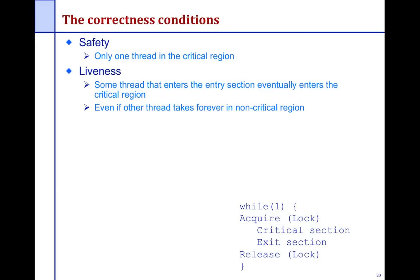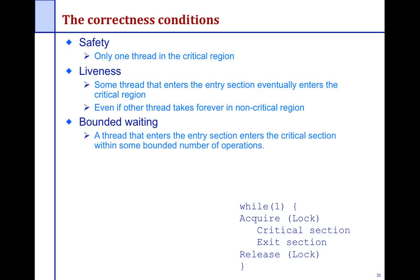The correctness condition is essentially that safety — there is only one thread in the critical section — which the lock acquire and release guarantee. Liveness essentially says that some thread that enters the entry section, that is, tries to acquire the lock, eventually enters the critical section.